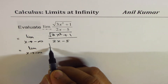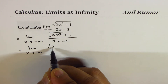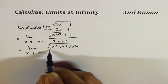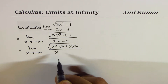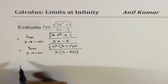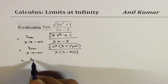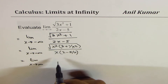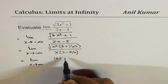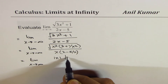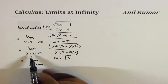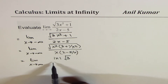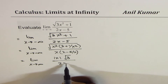In the numerator, we factor out x squared to get square root of x squared times (3 plus 1/x squared). In the denominator, we factor out x to get x times (2 minus 5/x). As x approaches a large number, 1/x squared is very small, so the numerator simplifies to the absolute value of x times square root of 3, and the denominator simplifies to 2x.